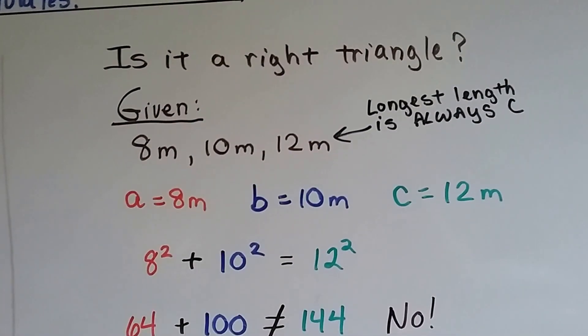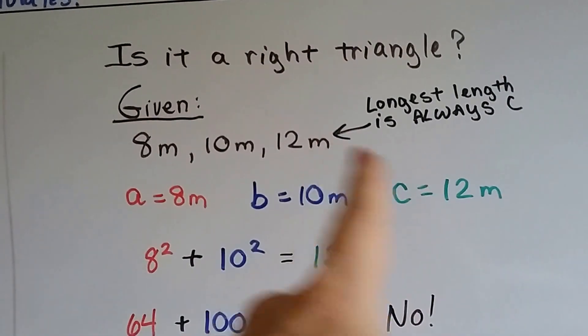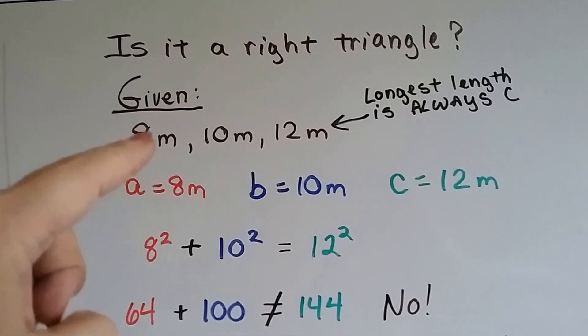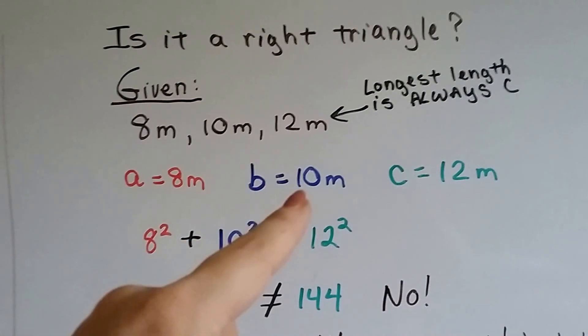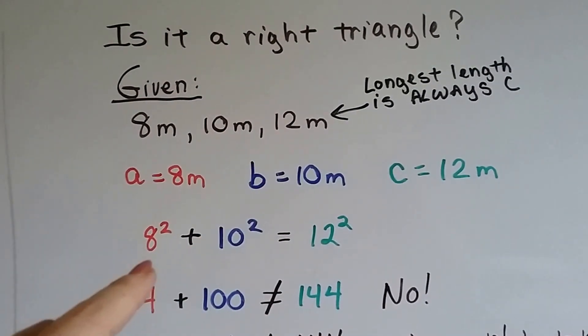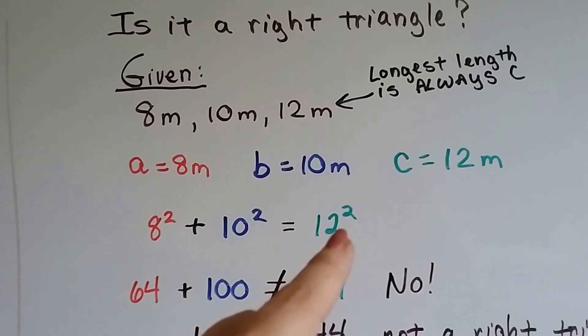So we have 8 meters, 10 meters, and 12 meters. So we assign the 12 meters as c, and 8 meters can be a, and 10 meters can be b. So we've got 8 squared plus 10 squared equals 12 squared.